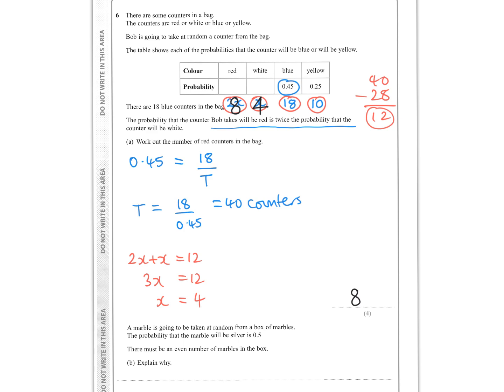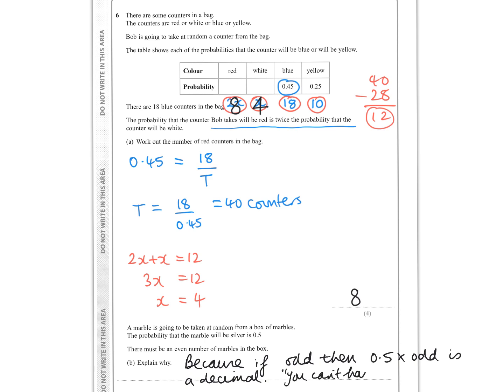A marble is taken at random from a box; the probability it will be silver is 0.5, and there must be an even number of marbles. I would explain: if the total is odd, then 0.5 times an odd number is a decimal — you can't have half a marble in the box. So for half of a number to be an integer, that number must be even.